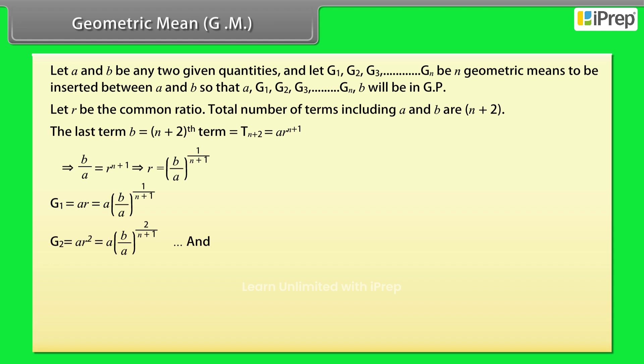G₂ is equal to a into r square is equal to a into (b by a) raised to power 2 by n plus 1. So on. And Gₙ is equal to a into r raised to the power n is equal to a into (b by a) raised to power n by n plus 1.